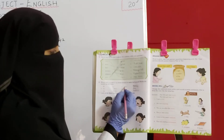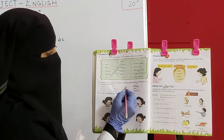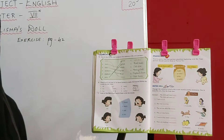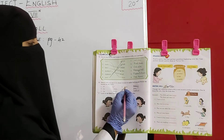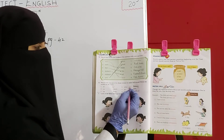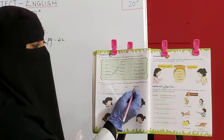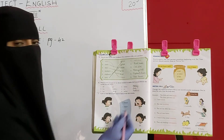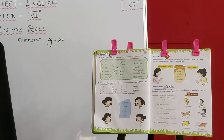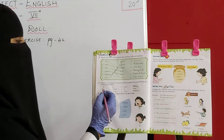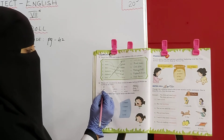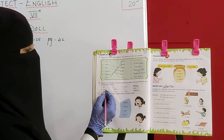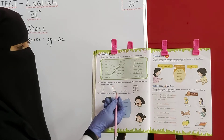Abhi next one check karenge: M-N-E-Y. Toh hum yahaan 'o' kahaan add karenge? M ke baad 'o' add karne se hamara ban jayega yeh word: money. M-O-N-E-Y — Money. Third wala: L-V-E. Toh hum yahaan L ke baad 'o' add karenge. Toh yeh ban jayega: L-O-V-E — Love.